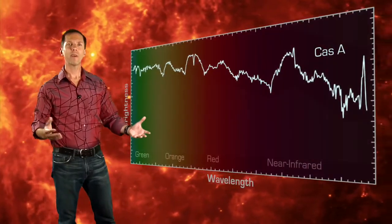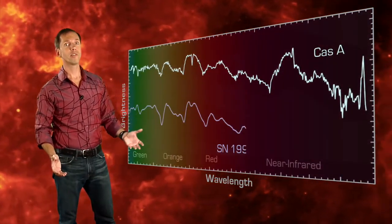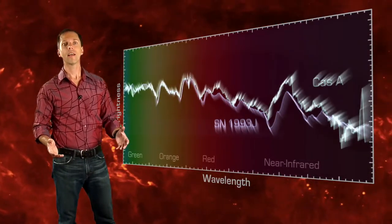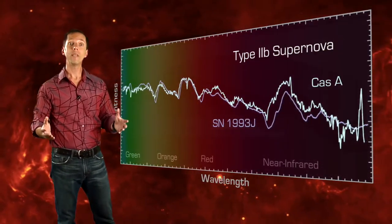The light echo has acted like an astronomical time machine, letting us study the original supernova using instruments that were beyond imagination in the 17th century. By matching its visible light spectral signature to a well-studied supernova in a nearby galaxy, Krause and his team have identified it as a so-called Type IIb supernova.